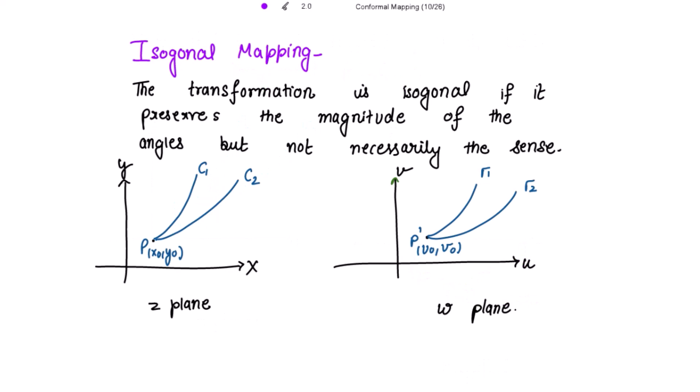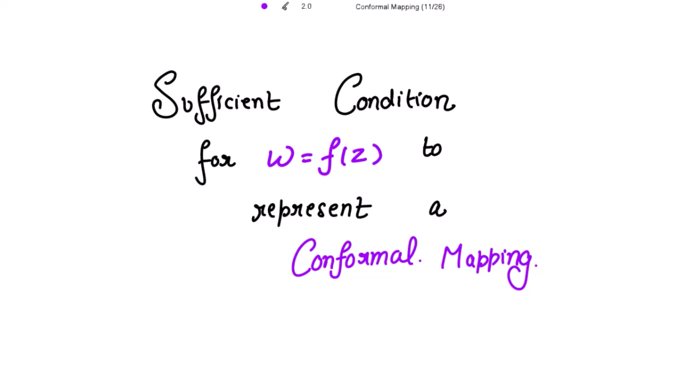For isogonal mapping: the transformation is isogonal if it preserves the magnitude of the angles. This means if the angle between c1 and c2 is alpha, and the angle between tau1 and tau2 is also alpha, but it is not necessary that the sense is also the same. Suppose this is negative alpha — the magnitude is the same but the sense is not the same — then we say that such kind of mapping is isogonal mapping.